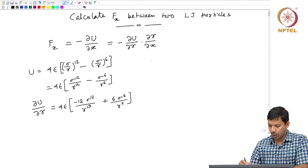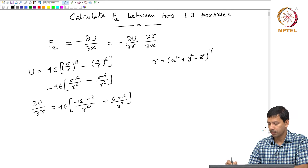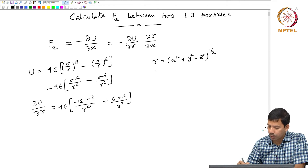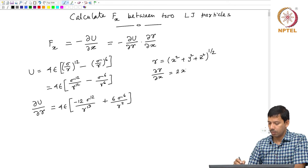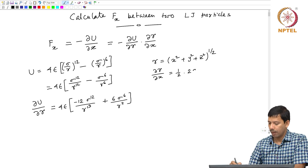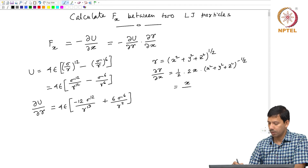Now, what is ∂r/∂x? Since r = (x² + y² + z²)^(1/2), we get ∂r/∂x = (1/2) · 2x · (x² + y² + z²)^(−1/2), which leads to x/r.